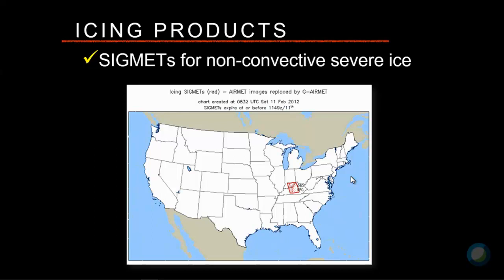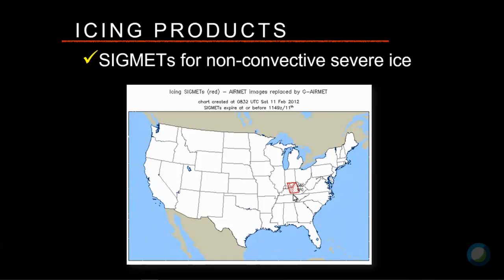SIGMETs cover the worst icing you're going to experience. The important thing to understand about SIGMETs is they're generally only issued once pilots start reporting those conditions — a forecaster isn't necessarily predicting severe ice ahead of time. Instead, they're waiting for pilot reports to come in, then they map off a SIGMET area indicating severe ice has been reported. In this case, two UPS freighters — one from Seattle, one from England — reported severe ice at 3,000 and 4,000 feet, which caught the attention of the Aviation Weather Center. SIGMETs essentially live and die by pilot weather reports.